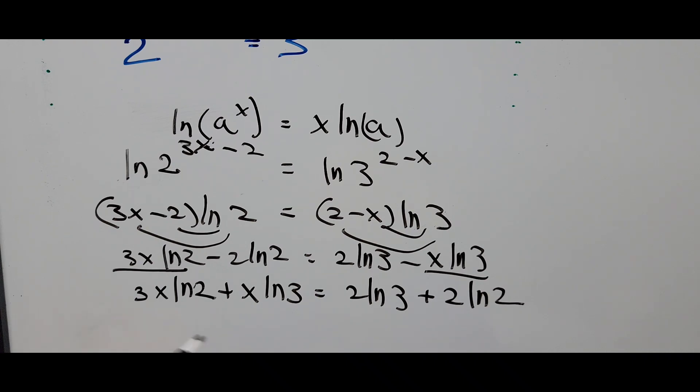Now we can factor this out. So x times 3 ln of 2 plus ln of 3 equals, we factor out 2 also on that, so 2 times ln of 3 plus ln of 2.